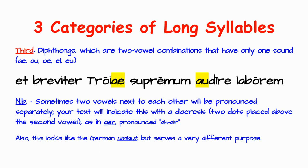The third category is diphthongs, which are two-vowel combinations that have only one vowel sound. The most common in Latin are AE (pronounced like 'I'), AU (pronounced 'ow'). Also OE (pronounced 'oy'), EI, and EU can also be diphthongs. We see in the same line we have this third category as well: 'Troiai' — OI, two vowels, one sound. That's going to be long. Similarly 'oderae' — AE, again a diphthong.